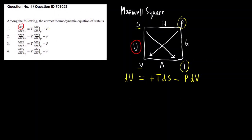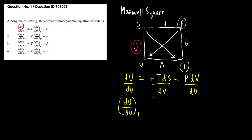For dV, in front of it there is pressure P, and since this arrow is not pointing towards pressure it will be minus. So we get dU = TdS − PdV. Now we divide everything by dV to get: dU/dV at constant temperature equals T·(dS/dV) at constant temperature minus P.